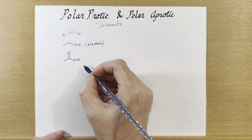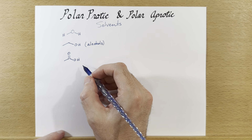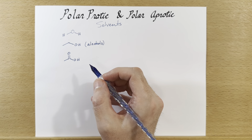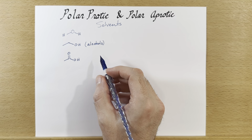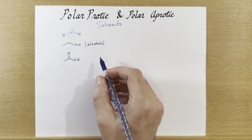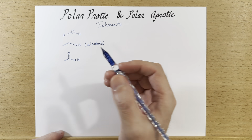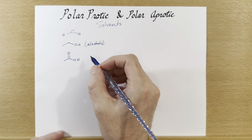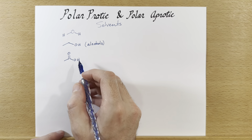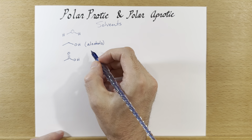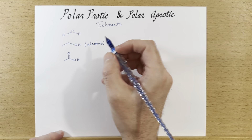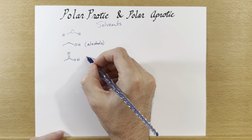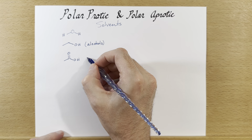Another protic solvent that sometimes gets used is acetic acid. You might think of it as vinegar, but we can get acetic acid with no water in it — it's called glacial acetic acid. It smells horrible but it's a useful solvent at times. As you'd expect, it can donate its proton because it's an acid. Other carboxylic acids could also be used as solvents.